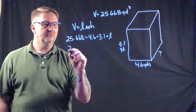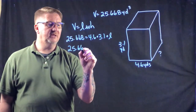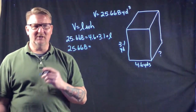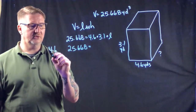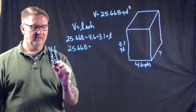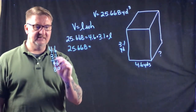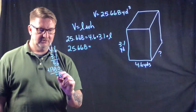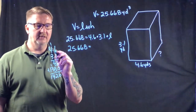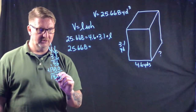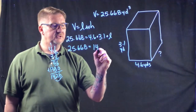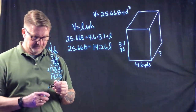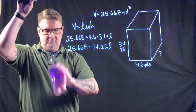First, I'll multiply 4.6 times 3.1. Working it out: 4.6 times 3.1 equals 14.26. So now the equation becomes 25.668 equals 14.26 times L.